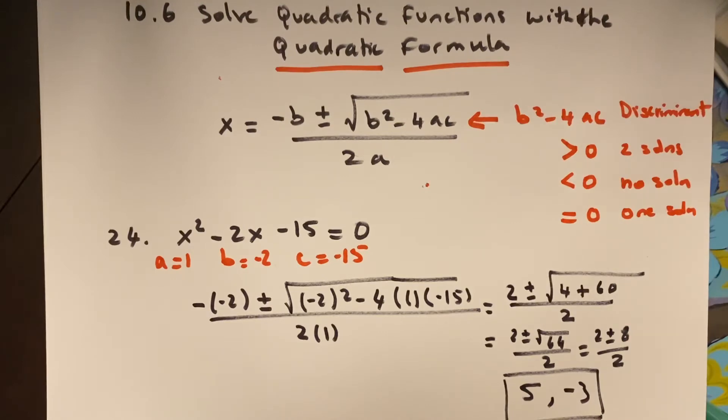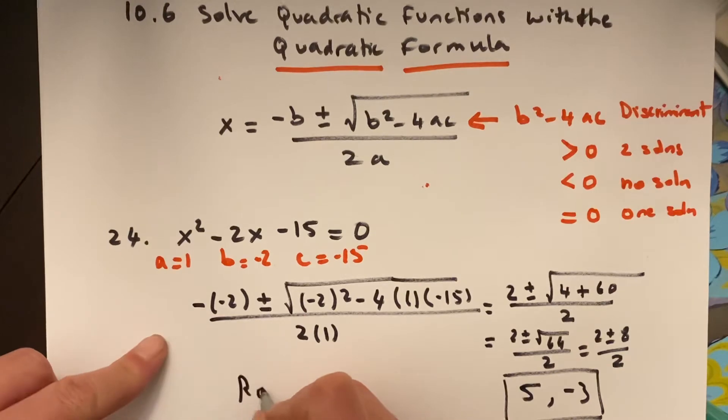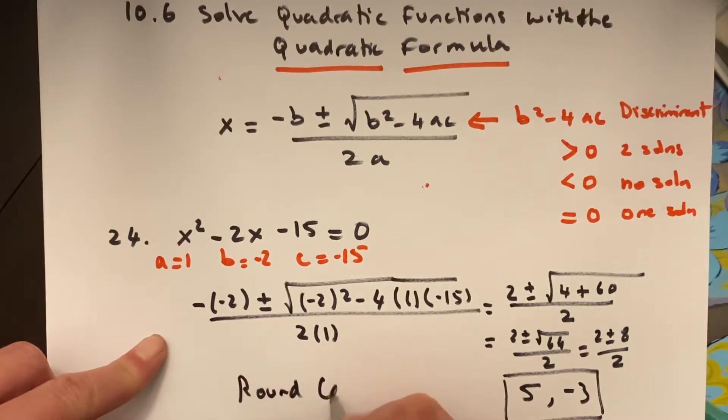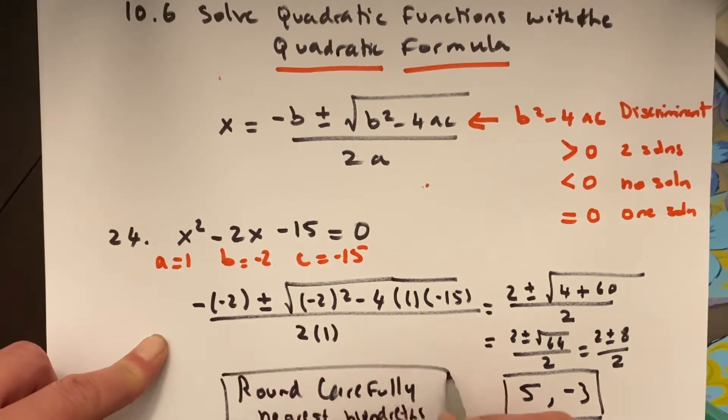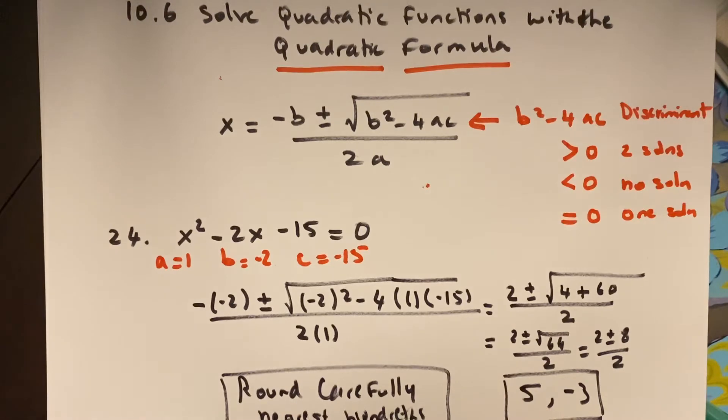I can see that most of the others are going to be some kind of decimal, but you've solved many like this. You want to go out to the nearest hundred, and I'm going to say, round carefully, and round to the nearest hundredth. Okay, so you don't lose points on something simple. Round carefully, you guys know how to round.